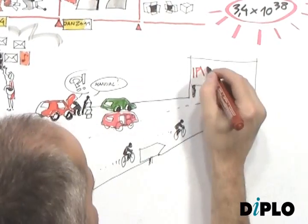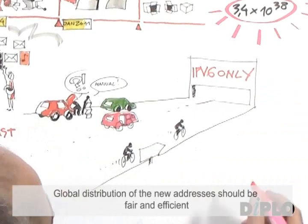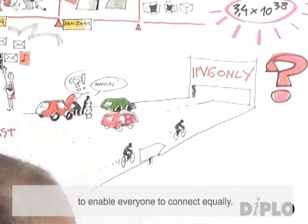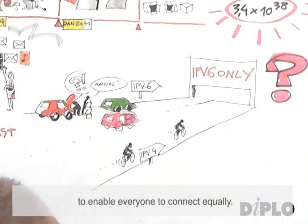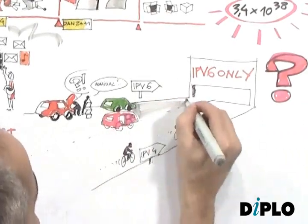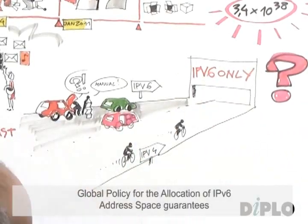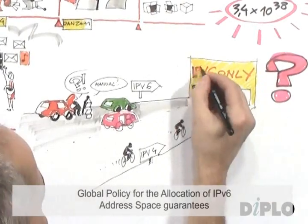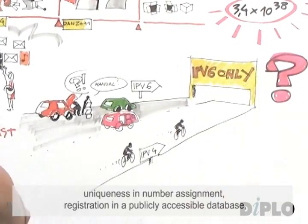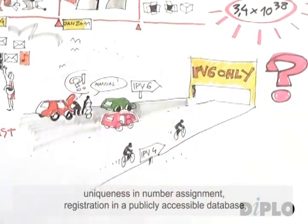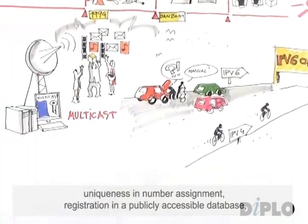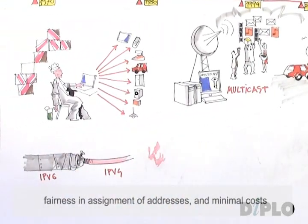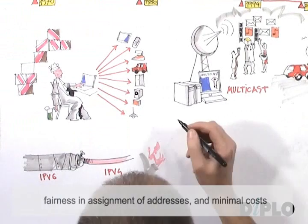Global distribution of the new addresses should be fair and efficient to enable everyone to connect equally. Global policy for allocation of IPv6 address space guarantees uniqueness in number assignment, registration in a publicly accessible database, fairness in assignment of addresses, and minimal costs.